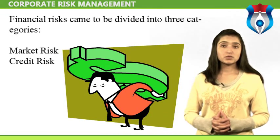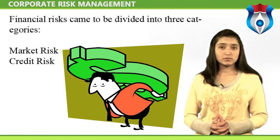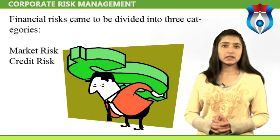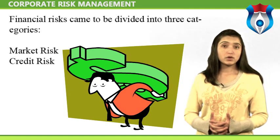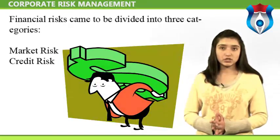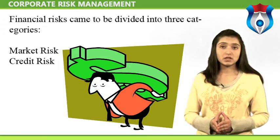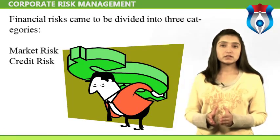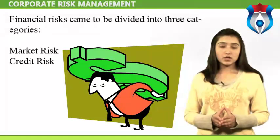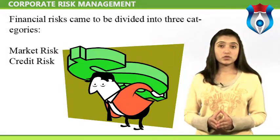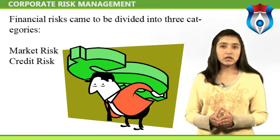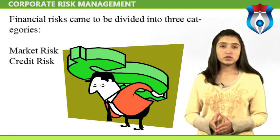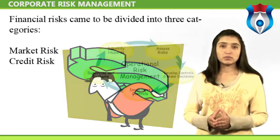In assessing credit risk from a single counterparty, an institution must consider three issues: Default Probability — what is the likelihood that the counterparty will default on its obligation either over the life of the obligation or over some specified horizon such as a year? Calculated for a one-year horizon, this may be called the expected default frequency. Credit Exposure — in the event of a default, how large will the outstanding obligation be when the default occurs? Recovery Rate — in the event of a default, what fraction of the exposure may be recovered?